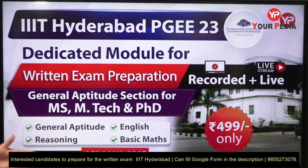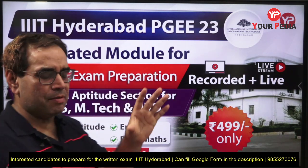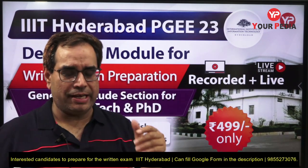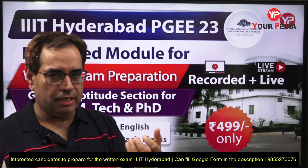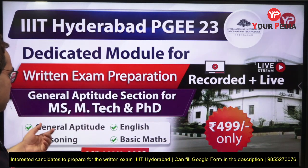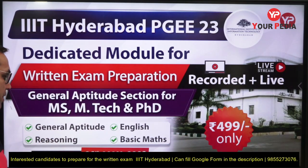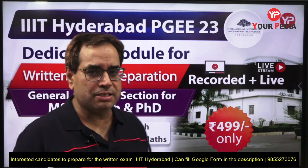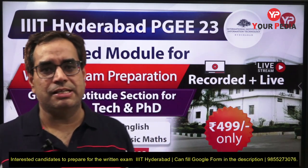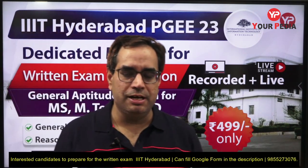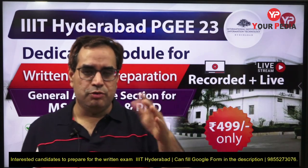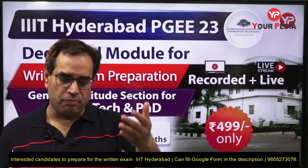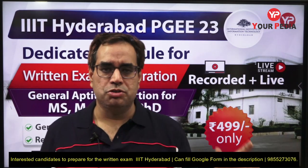In English, common types of questions can be asked. For reasoning, they ask verbal reasoning. For basic mathematics, some questions from matrix algebra, probability theory, calculus, and limits — essentially class 11 and 12 level mathematics — simple questions from these sections can also be asked.